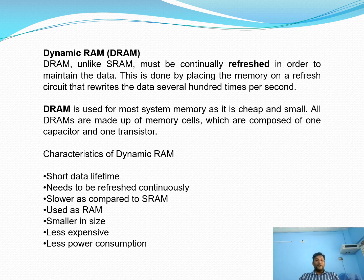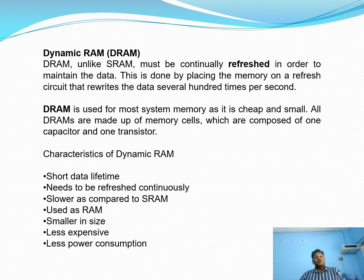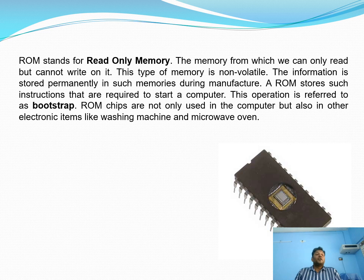Characteristics of static RAM: it has a long life, no need to refresh, it is the fastest memory, used as cache memory, large in size, expensive, and has high power consumption. Dynamic RAM, unlike static RAM, must be continuously refreshed to maintain or retain data. This is done by placing the memory on a refresh circuit that rewrites the data several hundred times per second. Dynamic RAM is used for most system memory as it is cheap and small. All dynamic RAMs are made up of memory cells composed of one capacitor and one transistor.